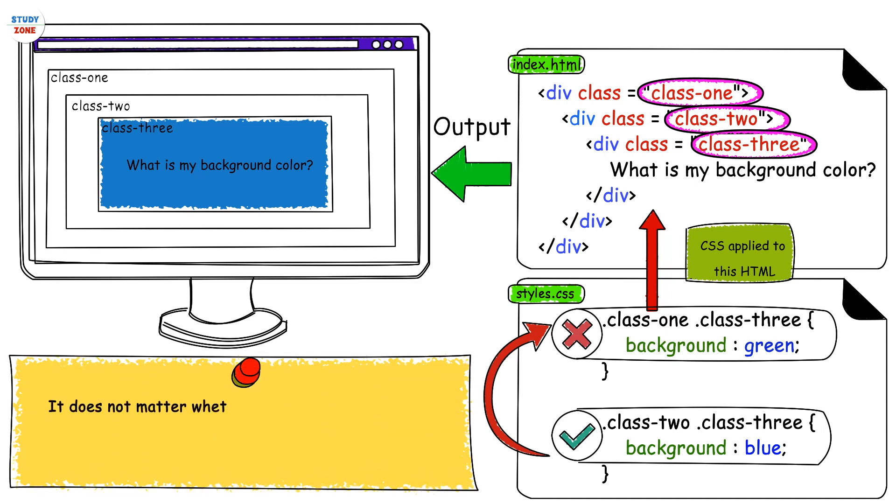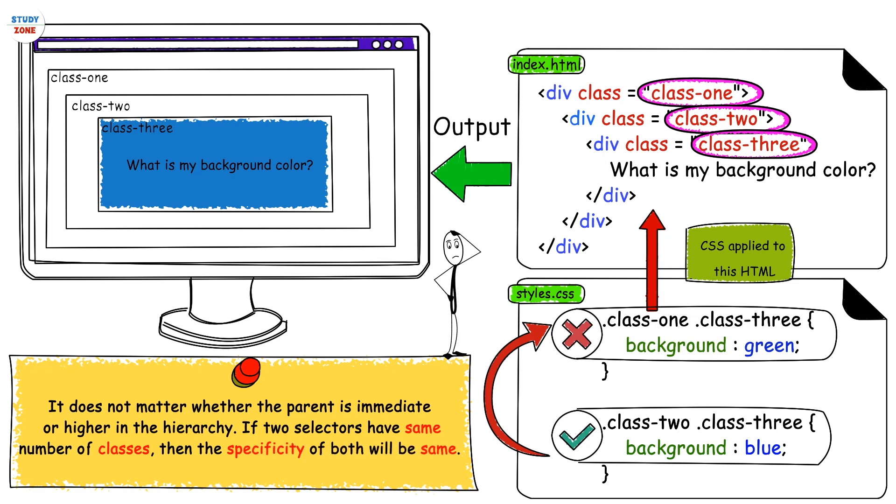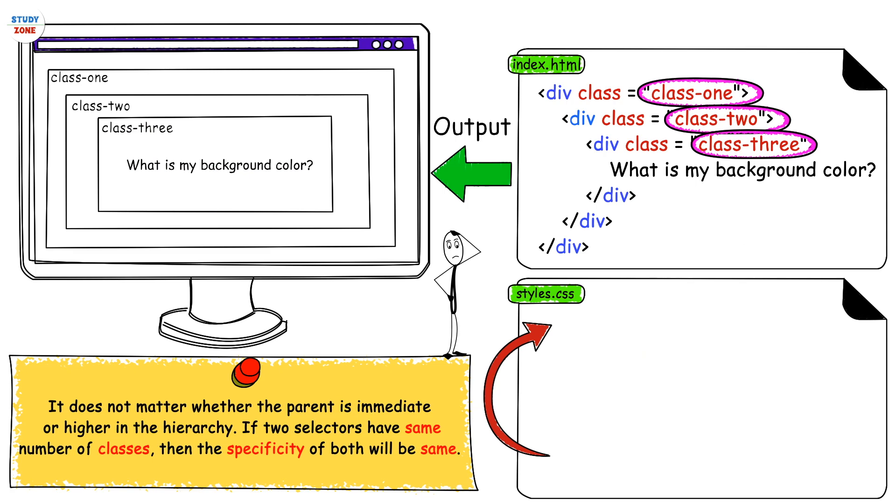Important tip: it does not matter whether the parent is immediate or higher in the hierarchy. If two selectors have same number of classes, then the specificity of both will be same.